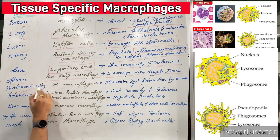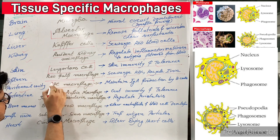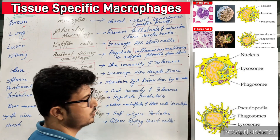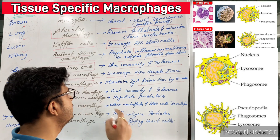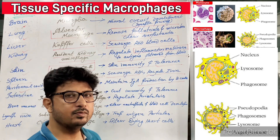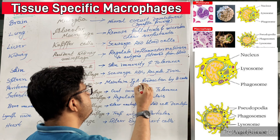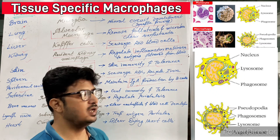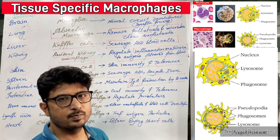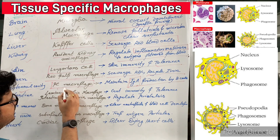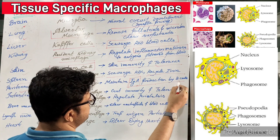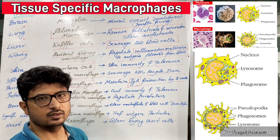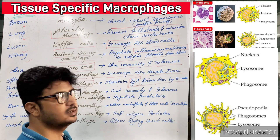Now coming to the peritoneal cavity macrophages — what do they do? They maintain IgA production by B cells. B cells produce antibodies, but these macrophages maintain specifically the IgA type antibody, because it is a cavity containing secretions and IgA is maintained in secretions. These macrophages maintain B cell production in the peritoneal cavity by activating B cells in response to infection or a pathogen and neutralizing it through this IgA antibody.